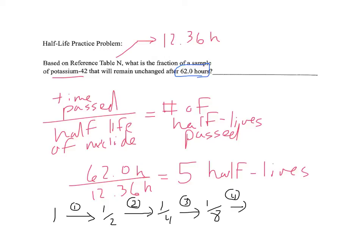Finally, for our fifth half-life, we have 1/32nd of the fraction remaining. Which means that our answer is going to be 1/32nd of that sample of potassium-42 will remain unchanged after 62 hours.